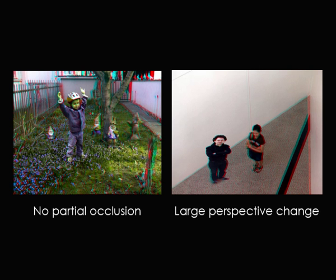There are a few limitations that we would like to address in future work. Approximating geometry with planar proxies has its limitations. In the left example, the copied object appears to float on top of the grass because the detailed structure of the grass surface is not well approximated by a plane. In the right example, the left person appears to be distorted after being pasted into a scene with a large orientation change.